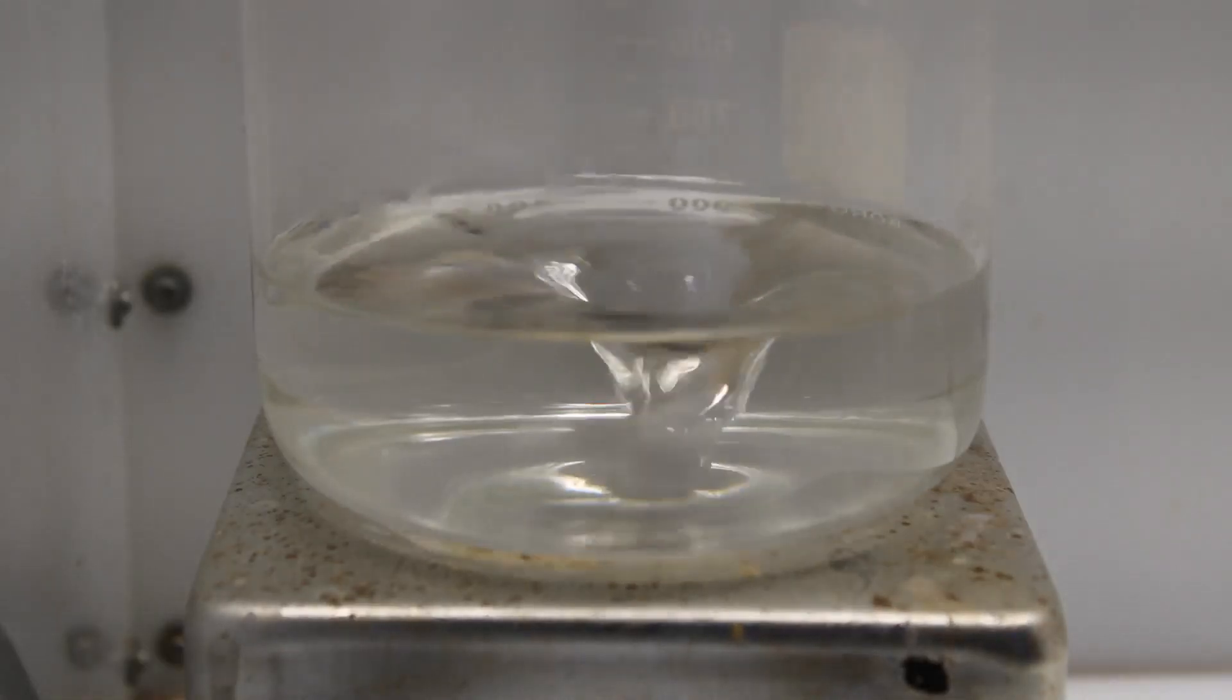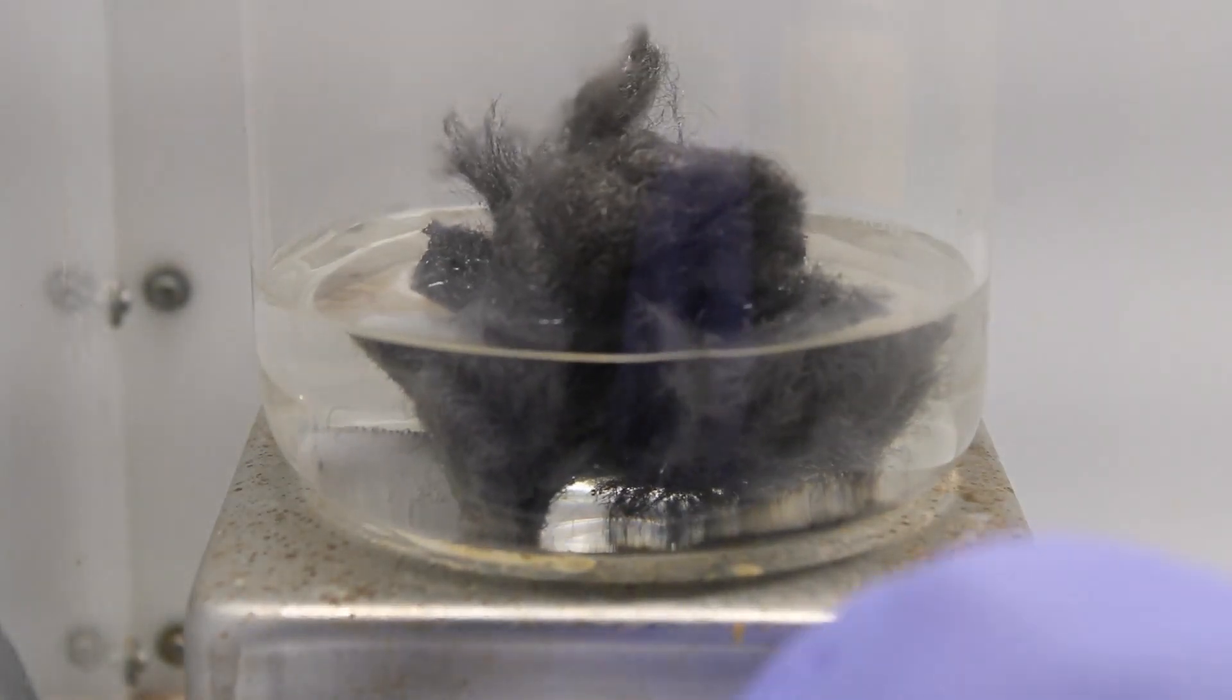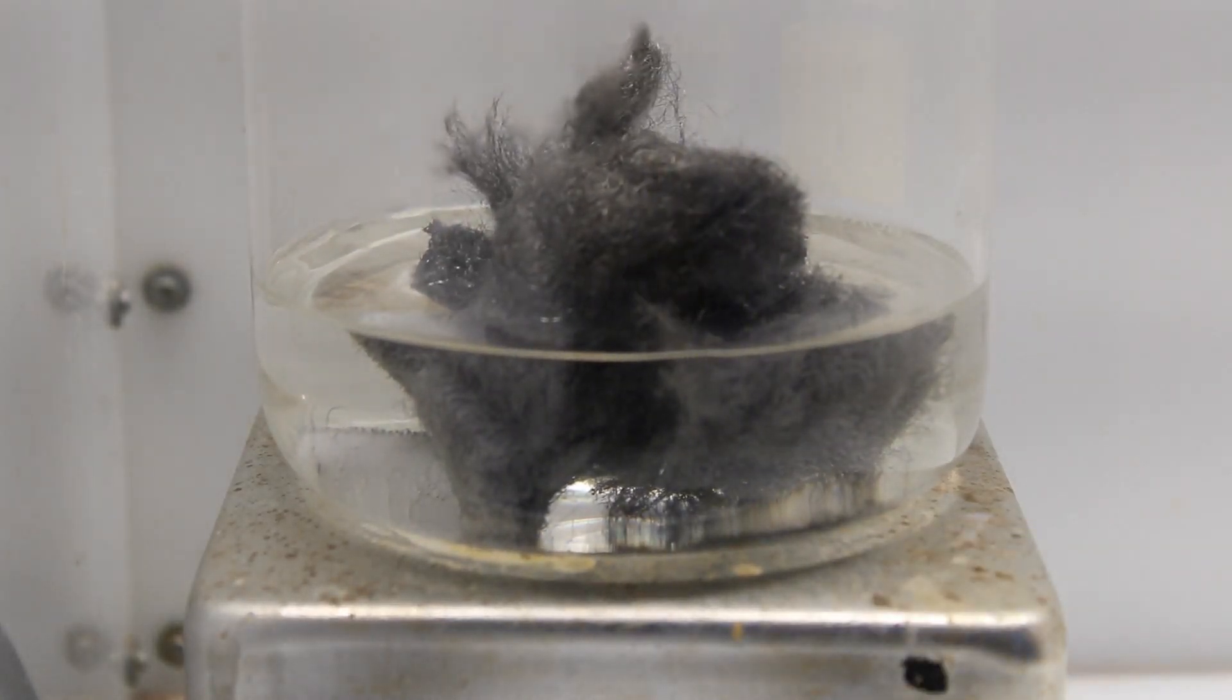Then, 0.5 mol of iron wool, or 27.92 grams, are added gradually with heating to speed things up.